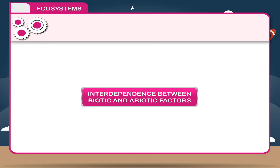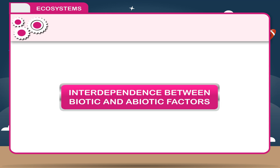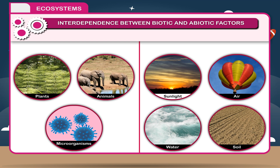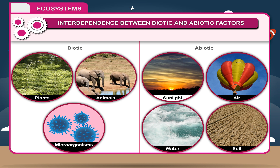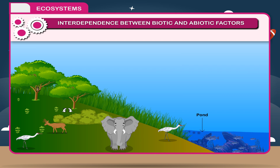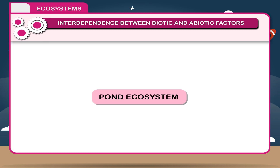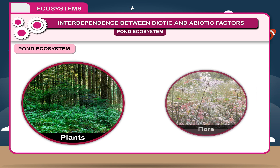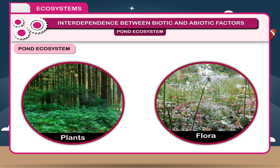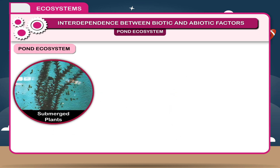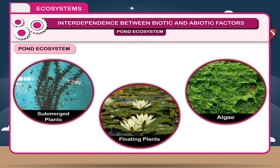Interdependence between biotic and abiotic factors. To understand the relationship between biotic and abiotic factors, let us study the pond ecosystem. A pond ecosystem is full of varieties of aquatic plants and animals as well as water, air, soil, and minerals. The plants or flora found in pond ecosystems include submerged plants, floating plants, and algae.